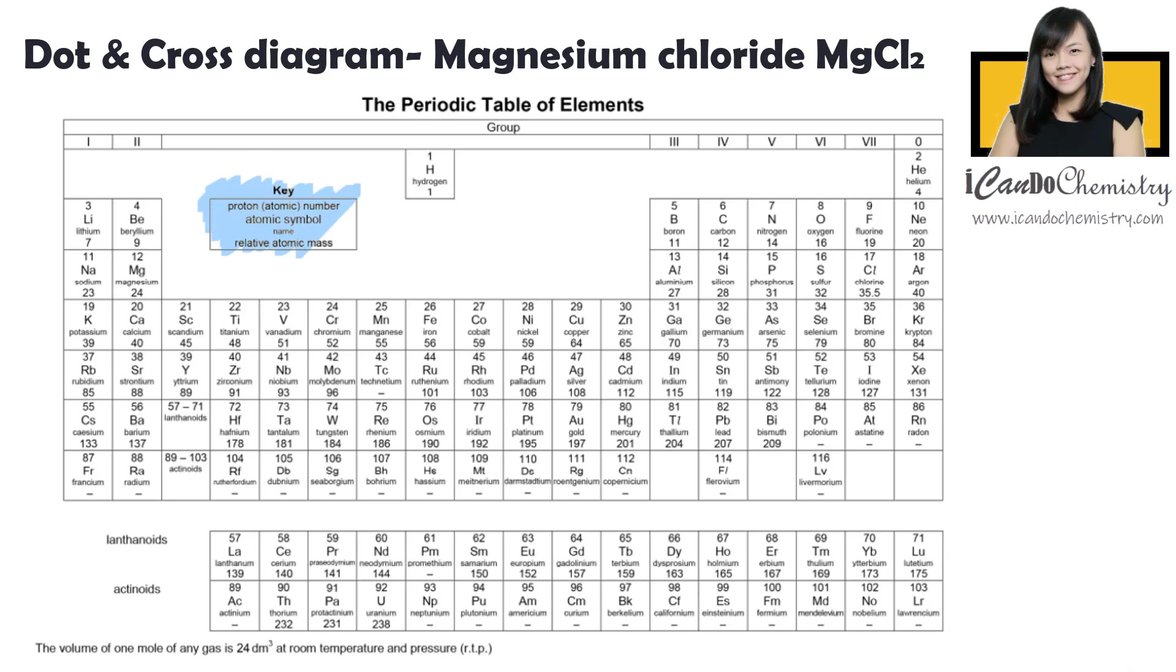Look here, the key. In this periodic table, the number at the top tells us the number of protons an atom has. Since the number of protons and electrons are the same in an atom, this number also tells us how many electrons each atom has. The number at the bottom tells us the number of protons and neutrons each atom has.